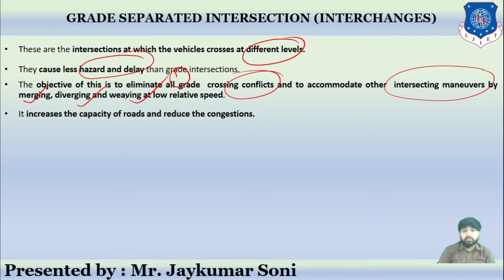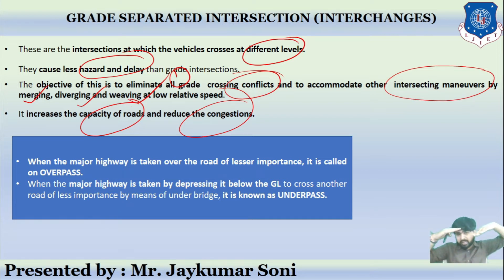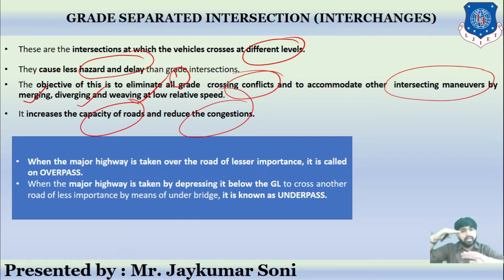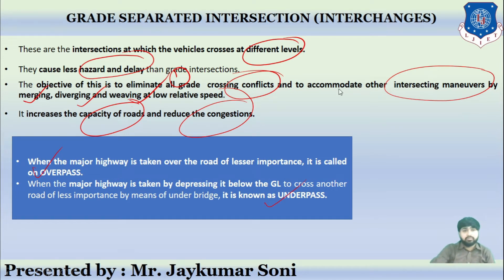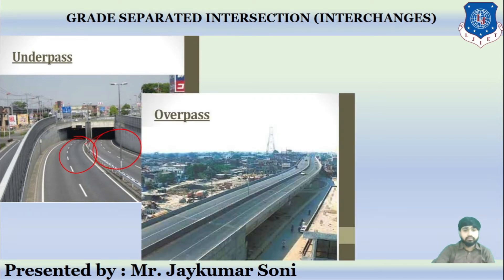Grade separated intersections increase the capacity of the road and reduce congestion. When the major highway is taken over the road of lesser importance, it is called an overpass. When the major highway passes at the lower level and the lesser importance road passes from the upper direction, it is called an underpass. This is the difference between underpass and overpass.